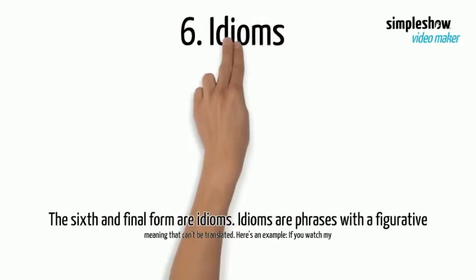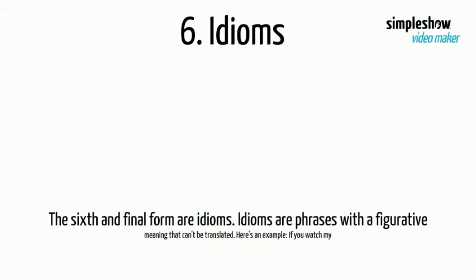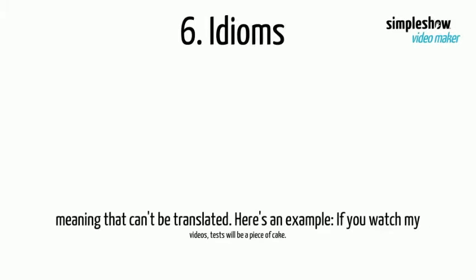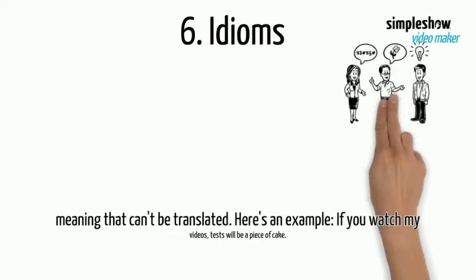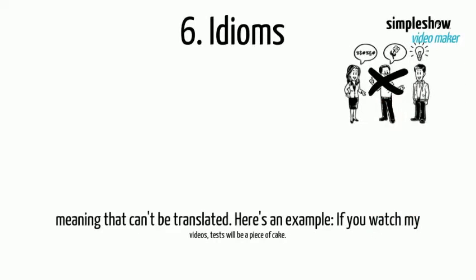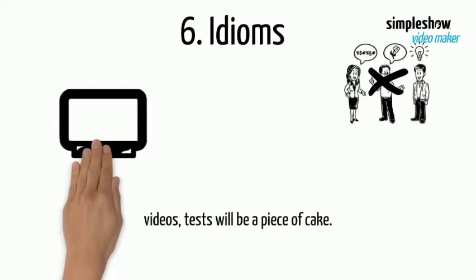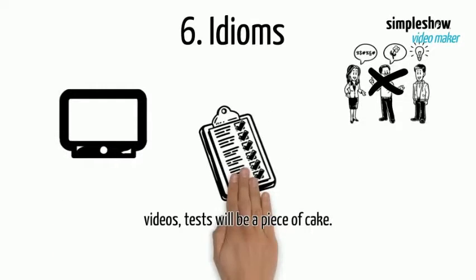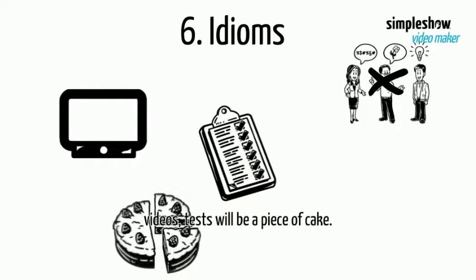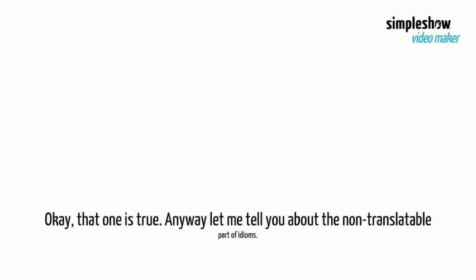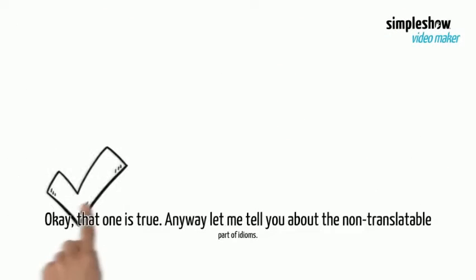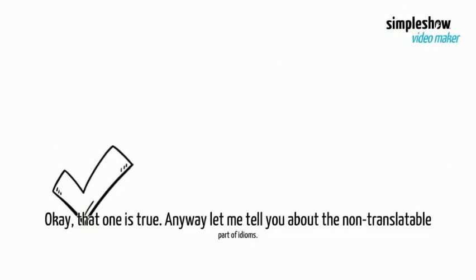The sixth and final form is idioms. Idioms are phrases with a figurative meaning that can't really be translated. Here's an example: If you watch my videos, the test would be a piece of cake. Okay, that one is true. Anyway, let me tell you about the non-translatable part of idioms.